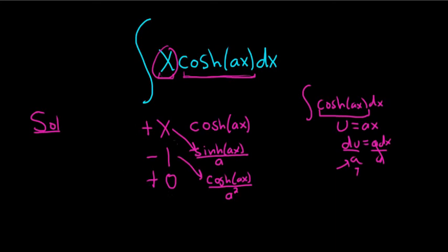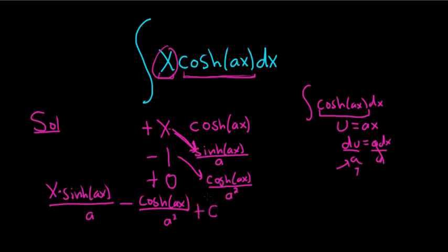You follow the arrows and you're done. So it'll be x times sinh(ax) over a, just following the arrow. That's the first arrow there. Then following the second arrow, it'll be minus cosh(ax) over a squared. At the very end we have plus C, our constant of integration. And that's it.